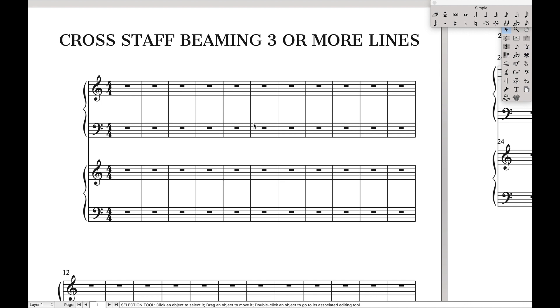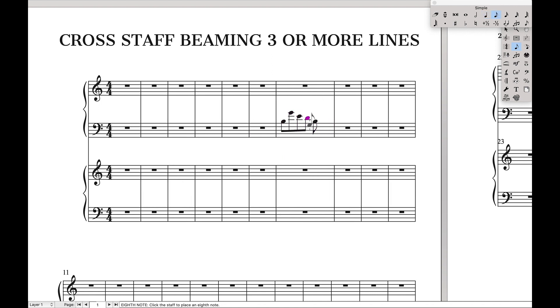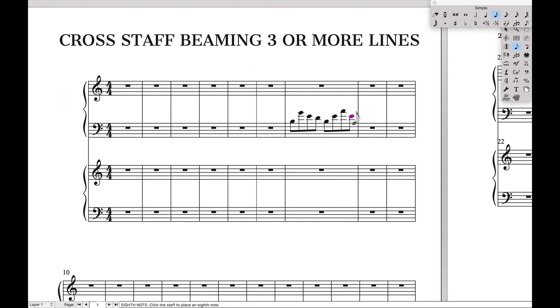Now, I already did a video on how to cross staff beam normally with a normal piano score. And just to recap that, if you have notes like this, and you want a certain number of notes to appear on one staff or the other, like let's say these three, you just hit option on a Mac and the up arrow, and it will automatically cross staff beam that for you.